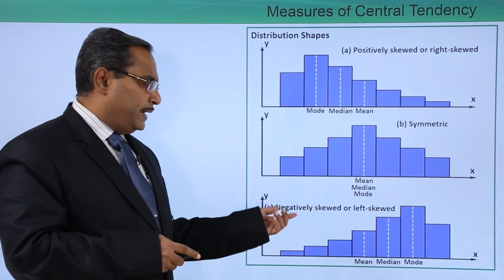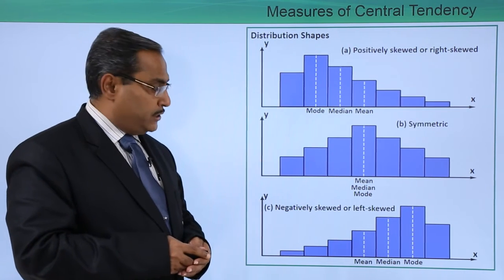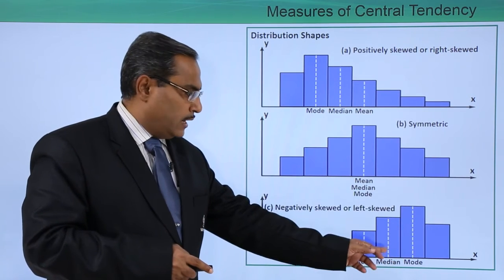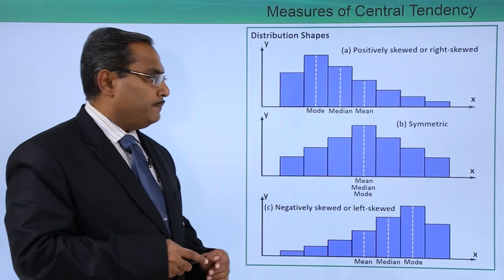But in case of negatively skewed or left skewed, you can find this one. The mode will be coming in this particular class, and median will be there, and mean will be here.